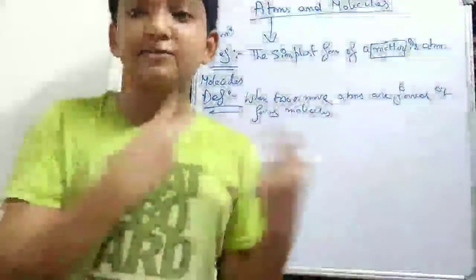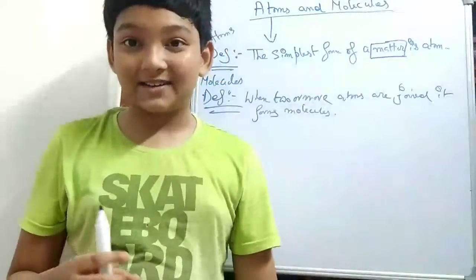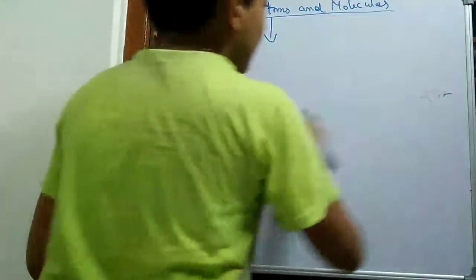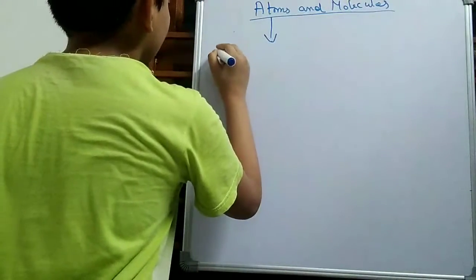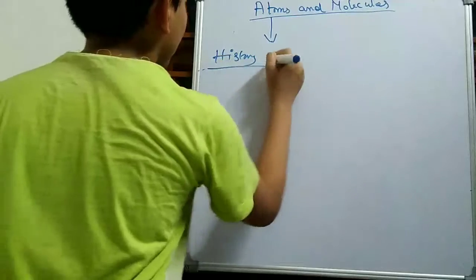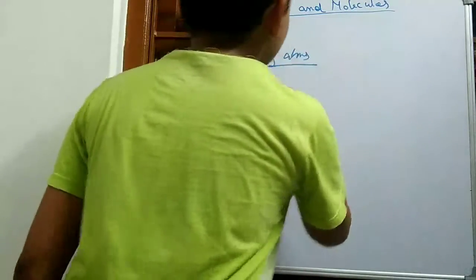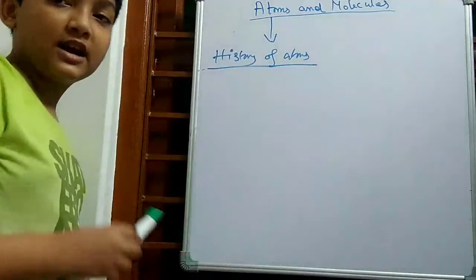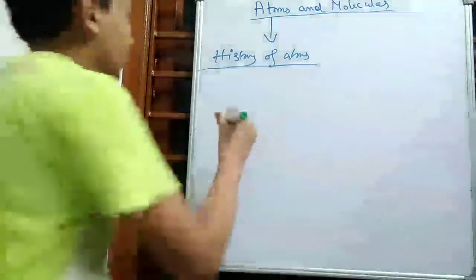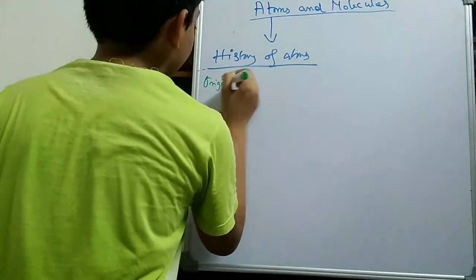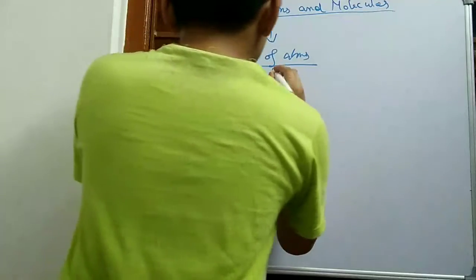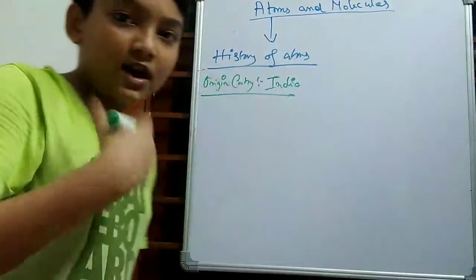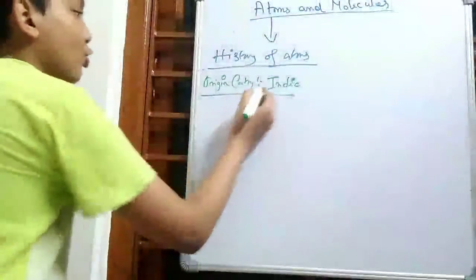So let's move on to the history of atoms. What is the history? The history of atoms comes from India. The origin country is India — that is from where these atoms came. Origin is India.